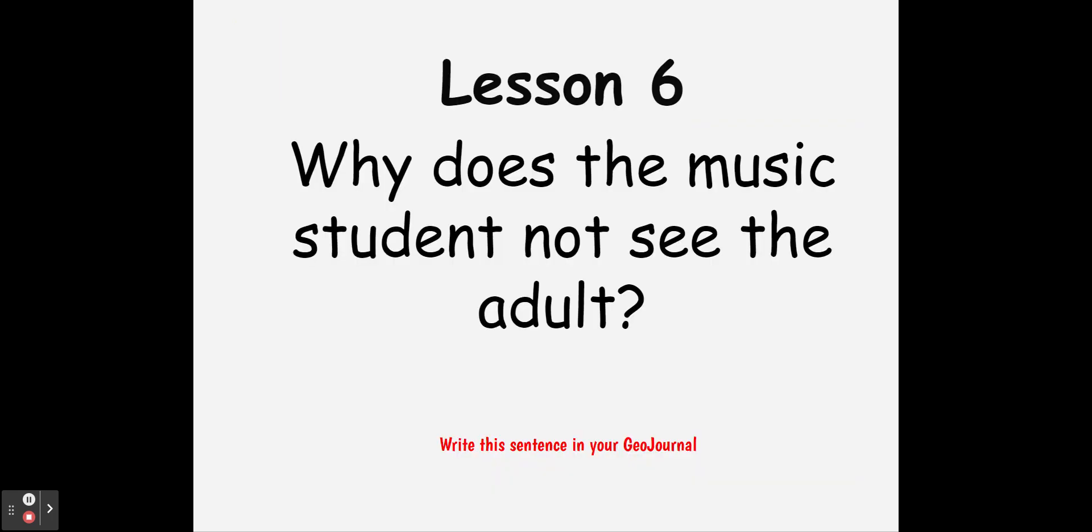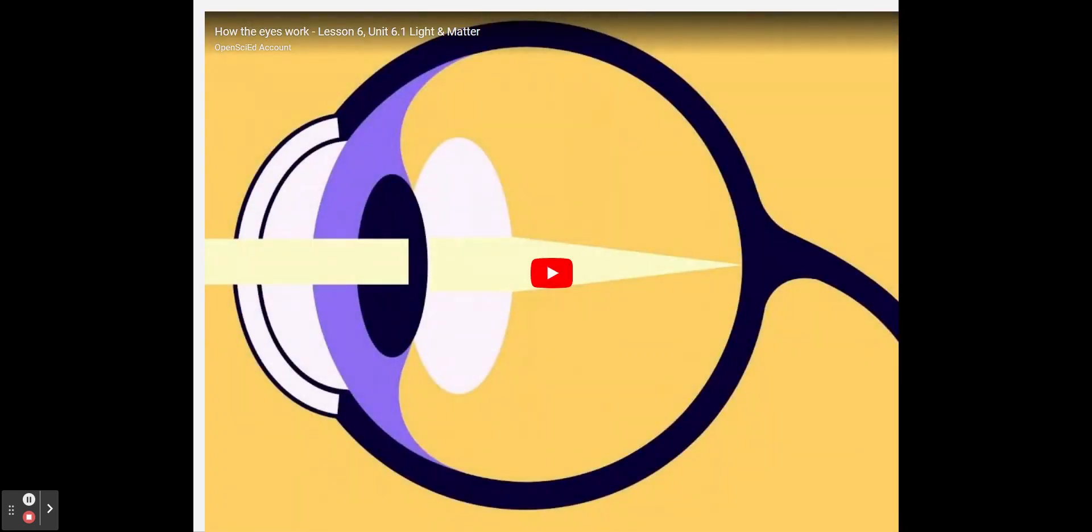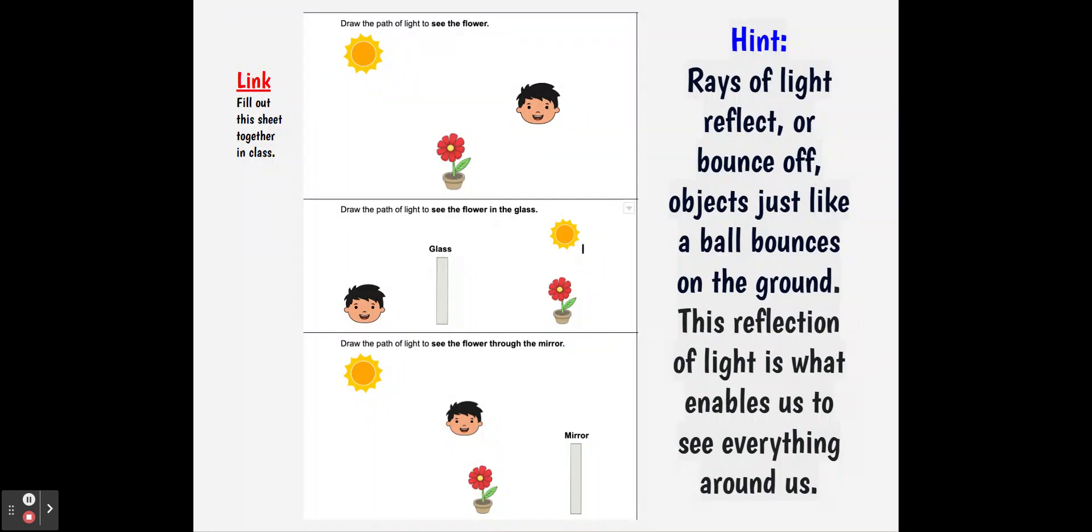Now, lesson six: why does the music student see themselves and not the adult? You're going to be asked to watch this video. So when you're done, you're going to make sure you watch this video on how the eye interprets light. This will help us understand this picture. And so this picture will be glued in your journal.